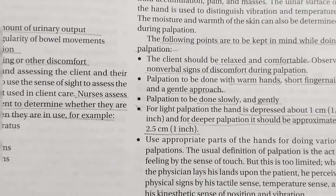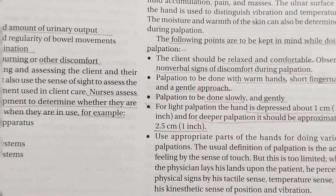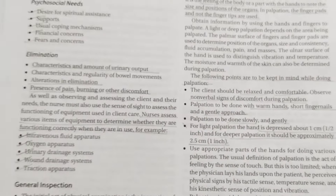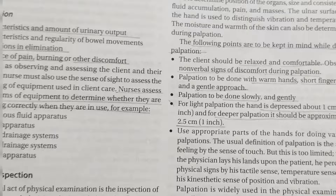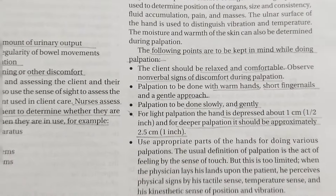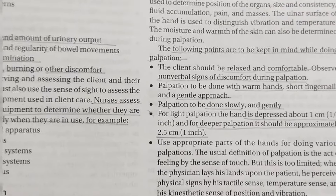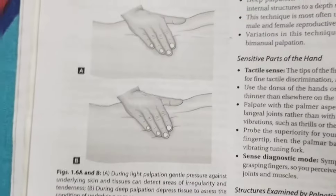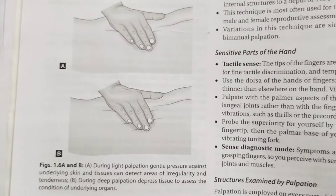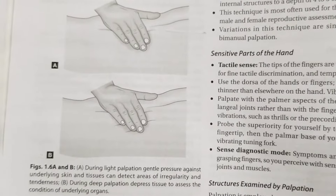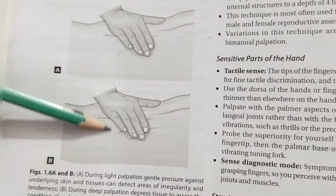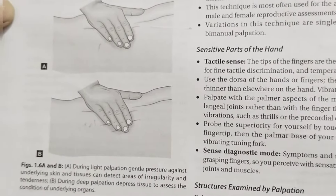Palpation is done with warm hands, short fingernails, and a gentle approach — do not press hard. You can record the feel, recognize fluid, and assess the patient condition. A diagram shows A for light palpation, where pressure is engaged on underlying skin and tissues at a shallow depth, and B for deep palpation at greater depth. This clearly shows the difference between light palpation and deep palpation.